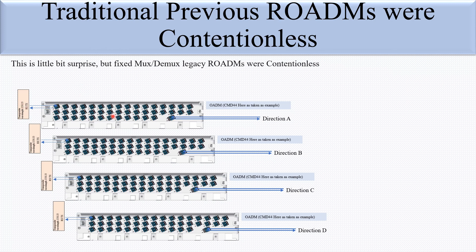Let's understand clearly with a diagram. Here you can see a four-direction OADM system with direction A, direction B, direction C, and direction D. For CMD 4x4, this common port connects to a particular amplifier or WSS. The common port of the amplifier or WSS is basically the direction. The common port is connected to the amplifier, which is called direction A, and if connected to the WSS, the common port of the WSS connects to the amplifier, making one fiber direction.